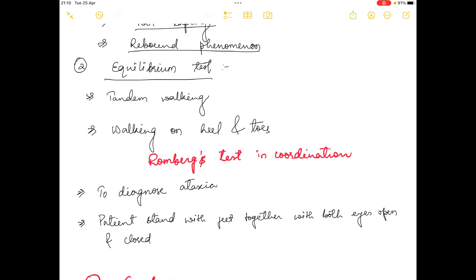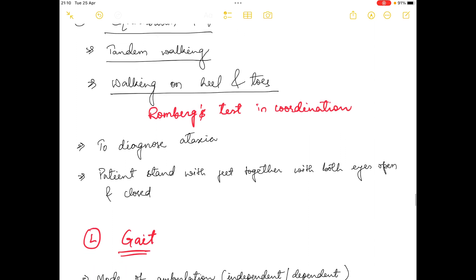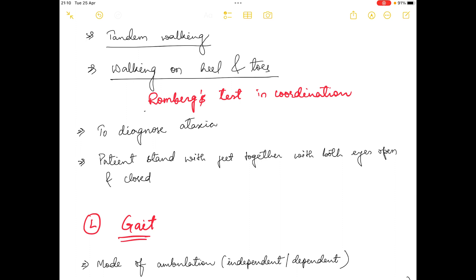In the equilibrium test, tests such as tandem walking, walking on heel and toes are most common. There is one more name in coordination: Romberg's test. Romberg's test is used to diagnose ataxic patients. It is performed when the patient stands with feet together with both eyes open and closed.